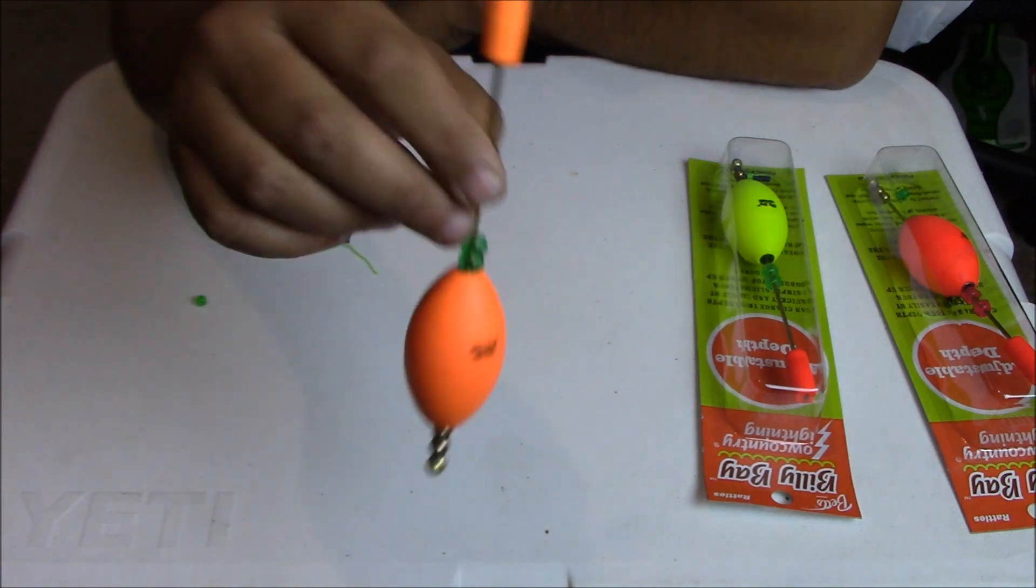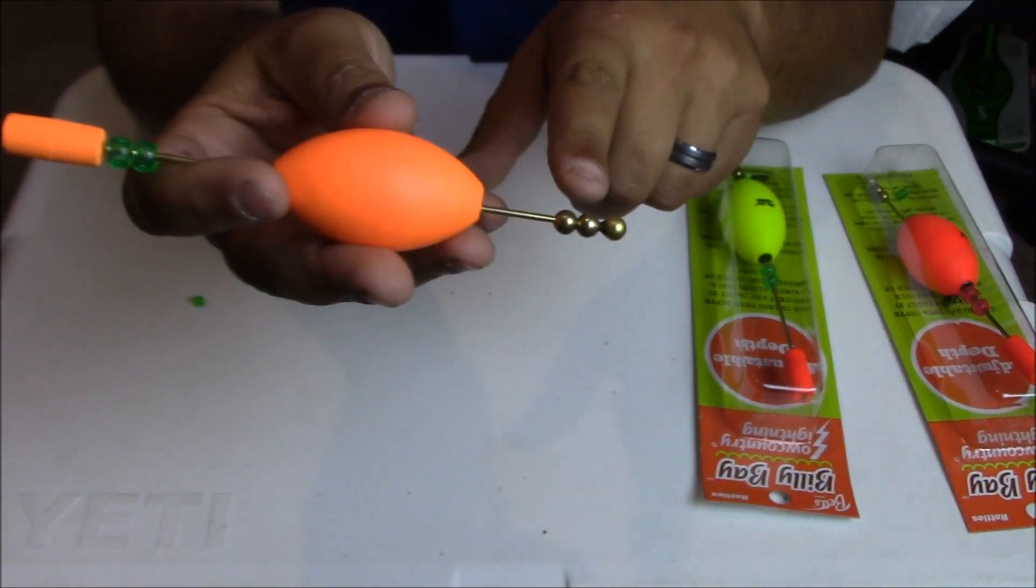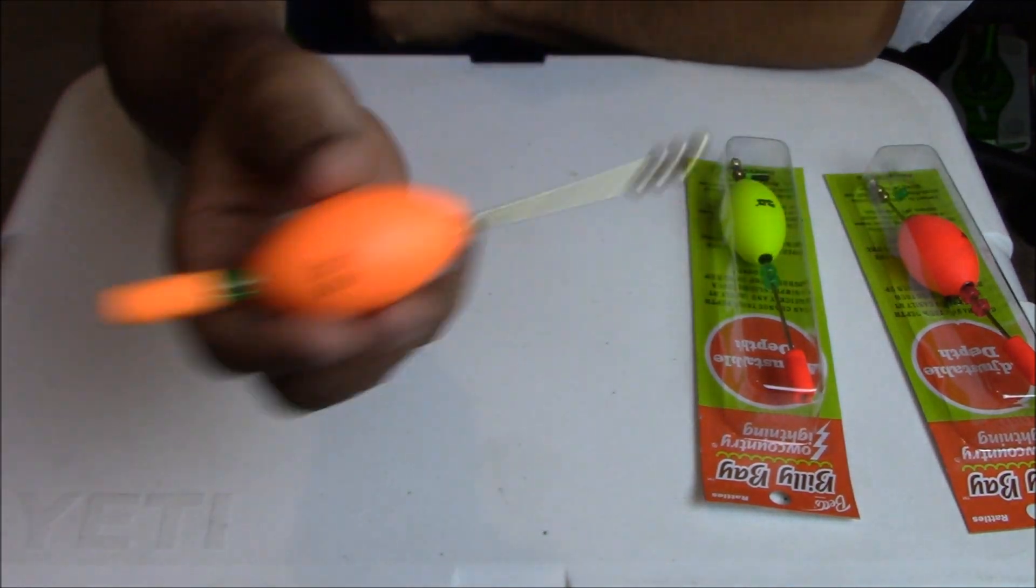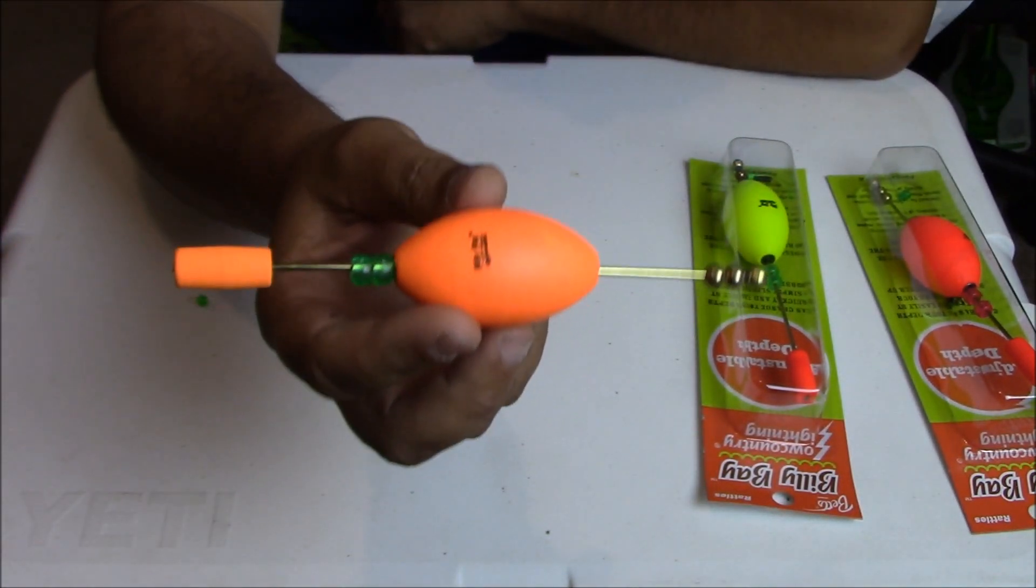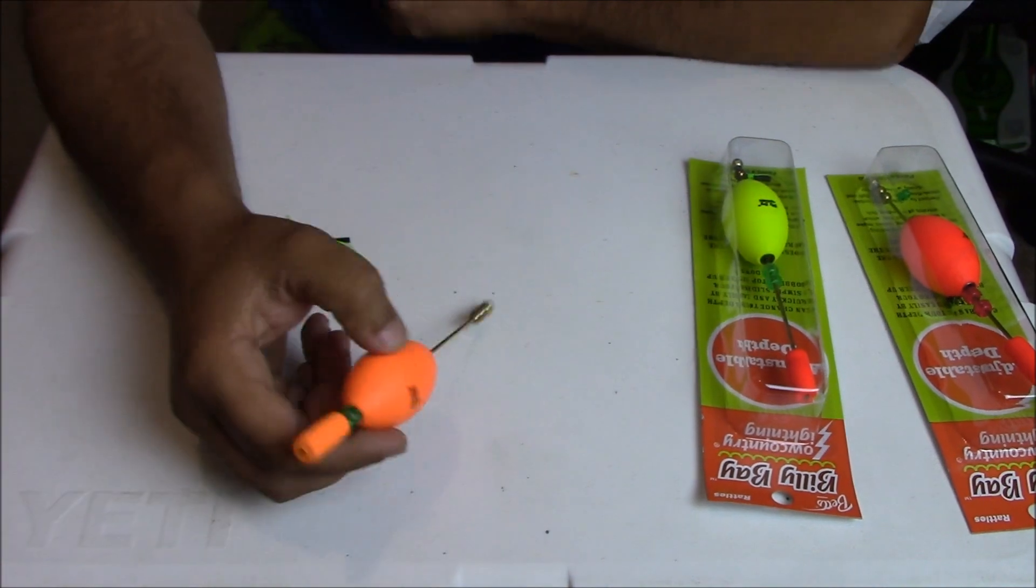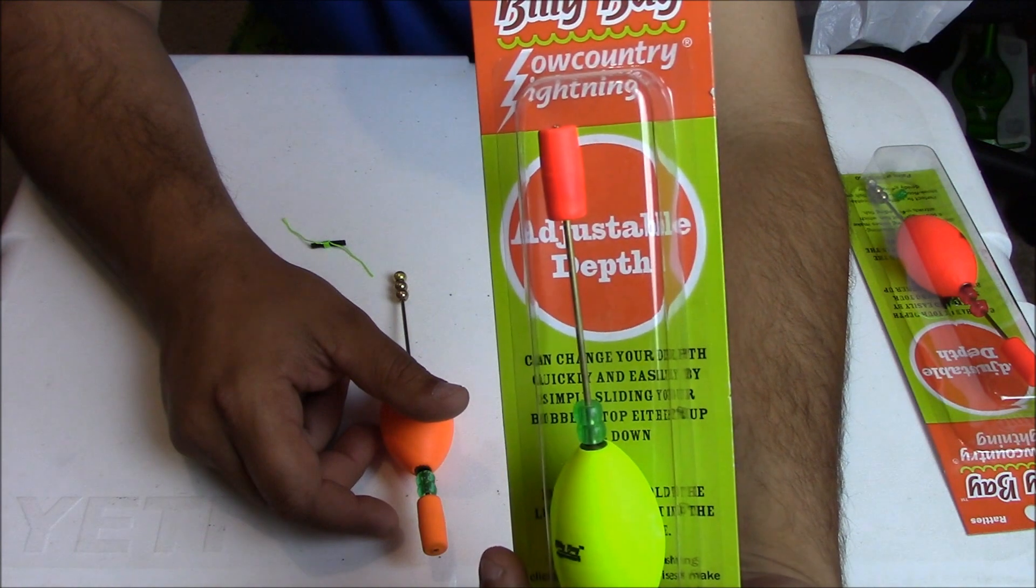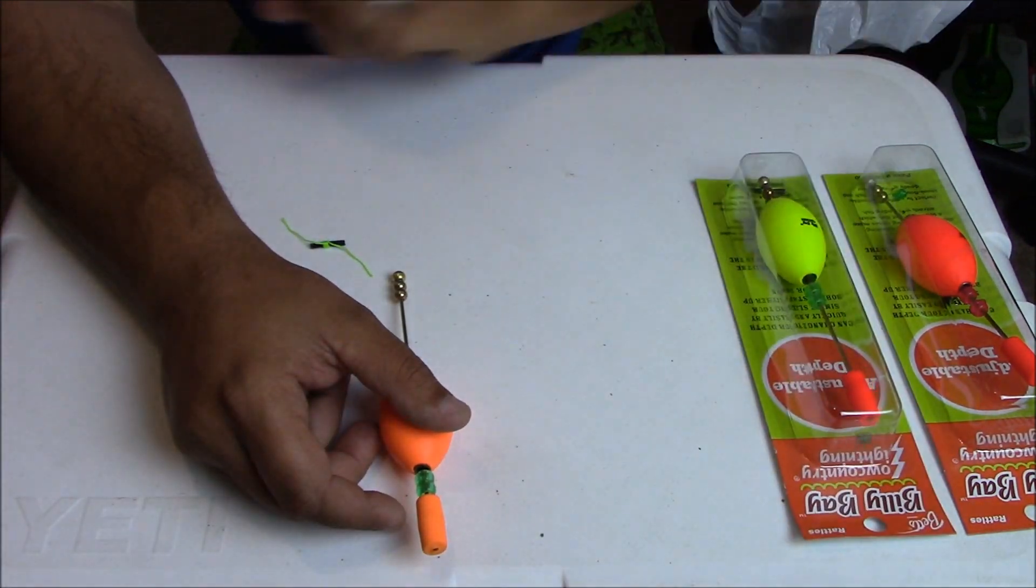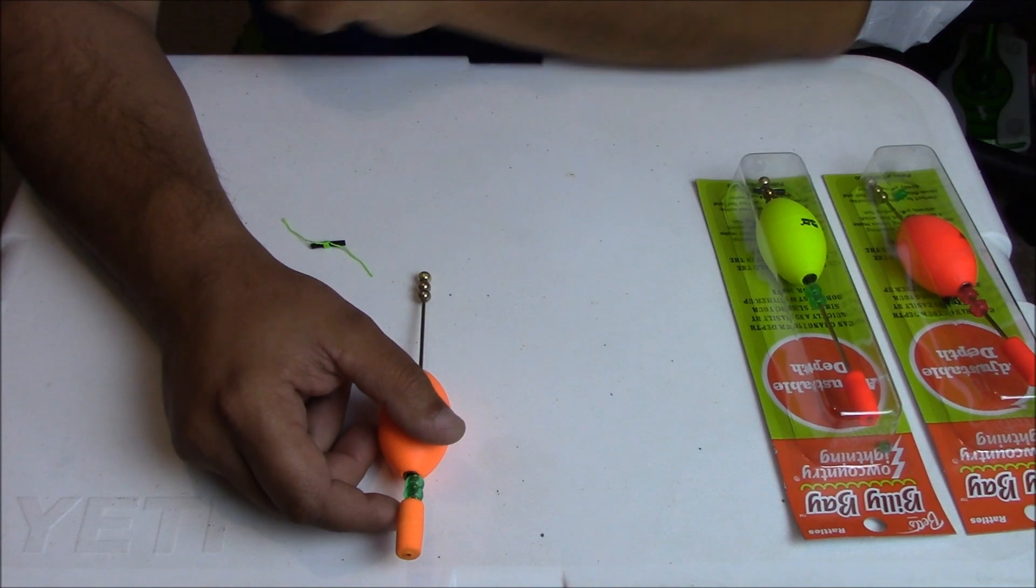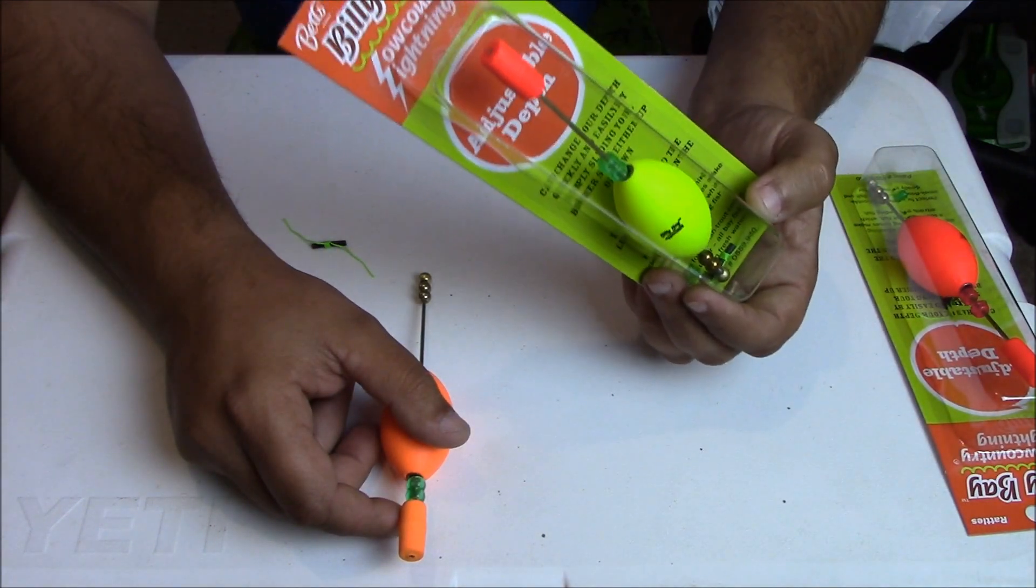This last cork that I like to throw is what I call a hybrid. It's a popping cork, you got your brass beads on the bottom, glass just like the other one, makes the same noise. What makes this one different is it's adjustable. Billy Bays makes these. This is their adjustable depth cork. You can pick these up at Cabela's or Bass Pro Shop. Good buddy of mine Andy Thomas bought me these for my birthday, so shout out to him. I really like these things.